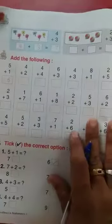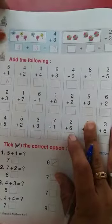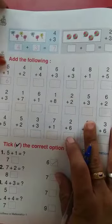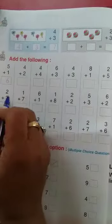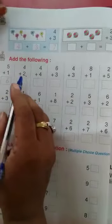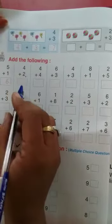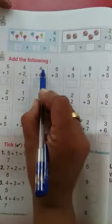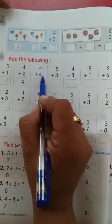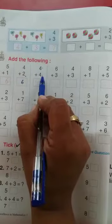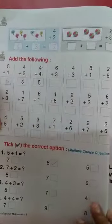Now page number 40 of your book. We have to add the following. 5 plus 1, 6. 4 plus 2. Agar hum isko count karengi to 4 plus 2 mein hota hai, 4 mein 2 plus karengi to 5 and 6. Thik hai? Then 4 plus 4. To 4 mein 4 plus karengi to 5, 6, 7, 8. Ok? Next remaining you have to do in your book.